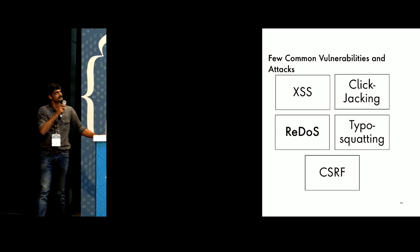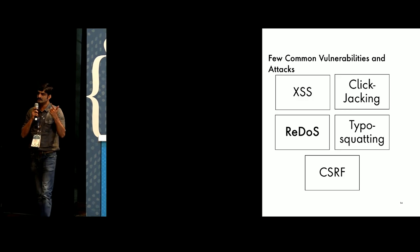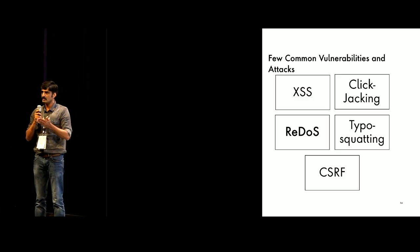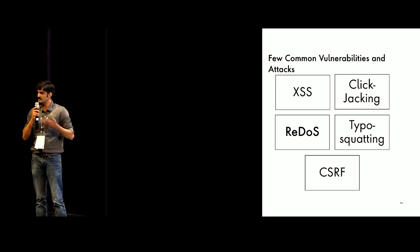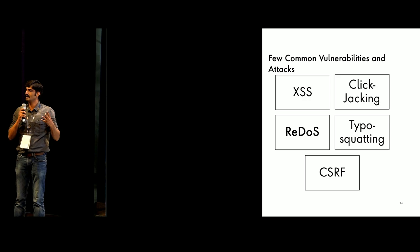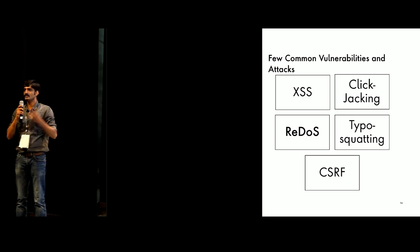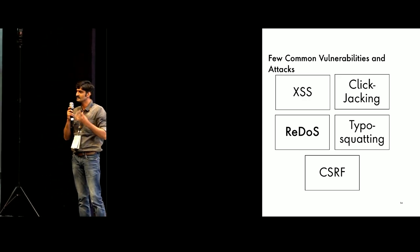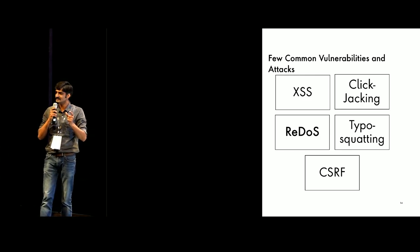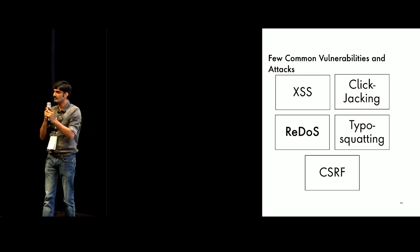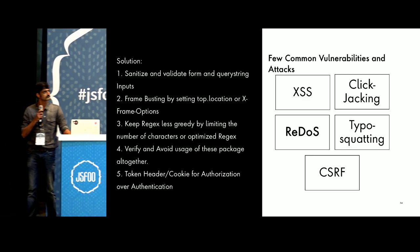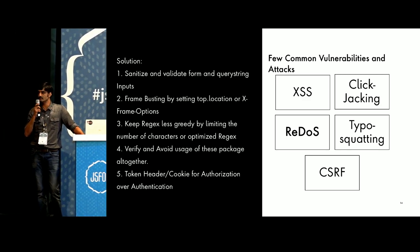Some common vulnerabilities and attacks: XSS, clickjacking, ReDoS, typosquatting, CSRF. You might have heard about these; if not, you can research around them. ReDoS is one important one because it blew my mind how a regular expression can create a denial of service attack. We write regular expressions for our validation rules in forms as well as for our routes, and this could cause the system to fall down, becoming a single point of failure in many cases.